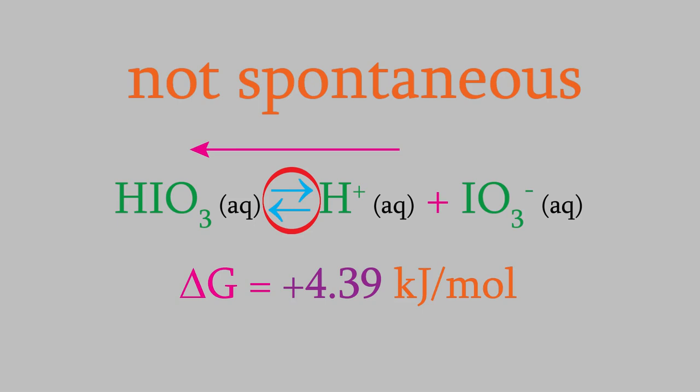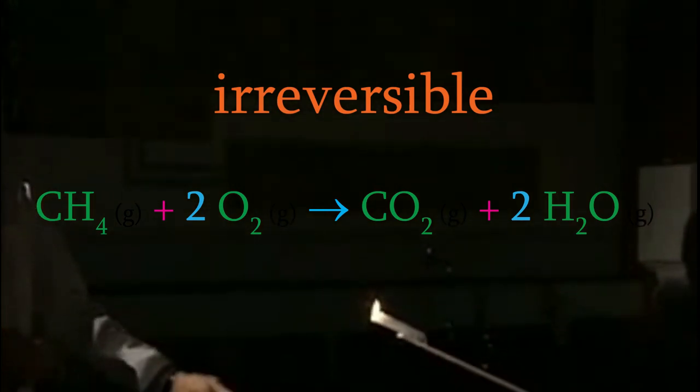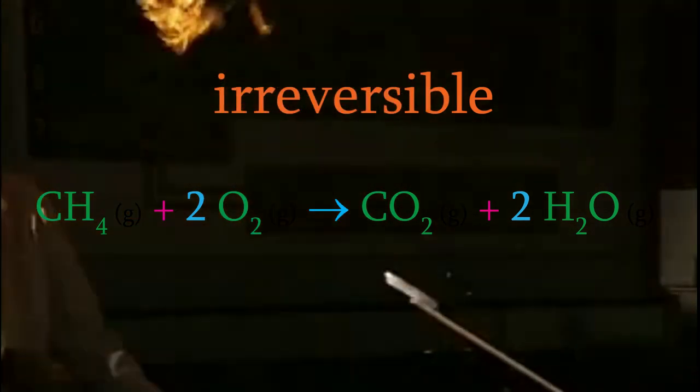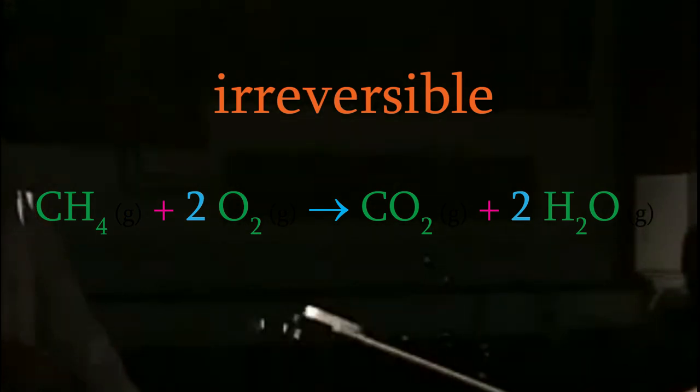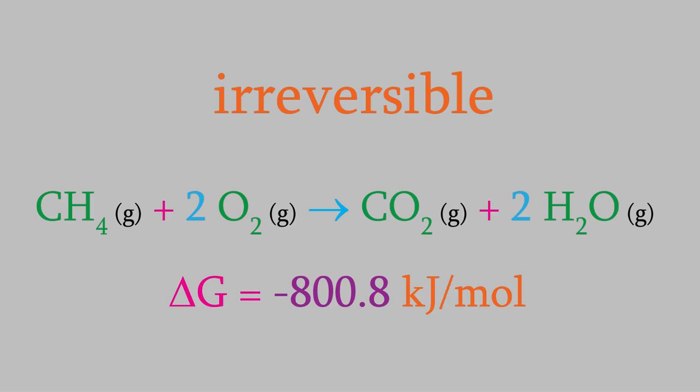On the other hand, reactions that have a Gibbs free energy greater than positive 5 kilojoules, or less than negative 5, are irreversible. For example, the combustion of methane is definitely an irreversible reaction — we never expect to see carbon dioxide and water recombine to reform methane and oxygen. When we calculate delta G, we find that it's negative 800.8 kilojoules per mole. That's way outside the range we'd get for a reversible reaction — it's a large negative number, so the reaction is irreversible in the forward direction.